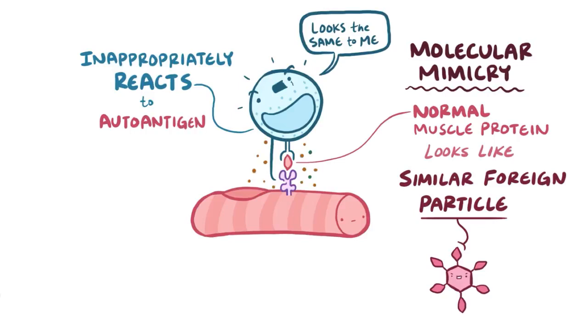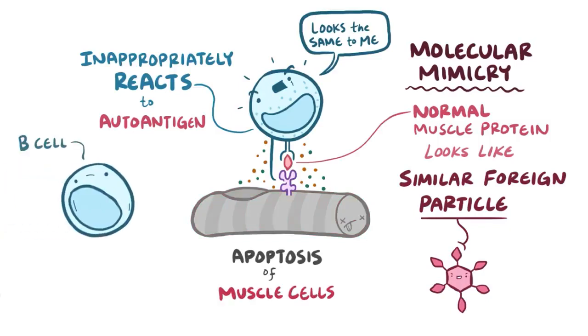So when the cytotoxic T cells are activated by the autoantigen, they cause apoptosis of the muscle cells. In some cases, B cells start producing antibodies against these autoantigens as well.